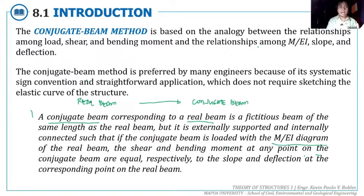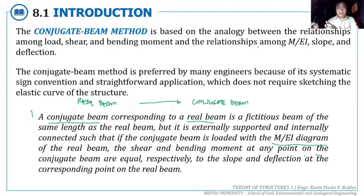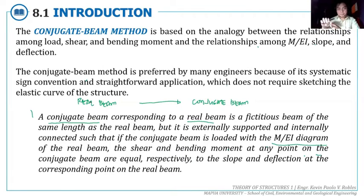When the area of the moment diagram is above the axis — meaning positive moments — when transferred to the conjugate beam, the direction of that equivalent load would be upward. For negative moment diagrams on the real beam, when transferred to the conjugate beam, it would be a load directed downward. So basically, the loads are directed away from the axis of the conjugate beam.